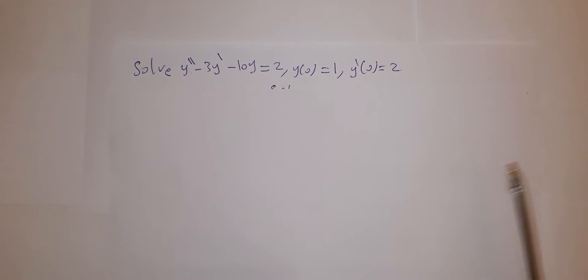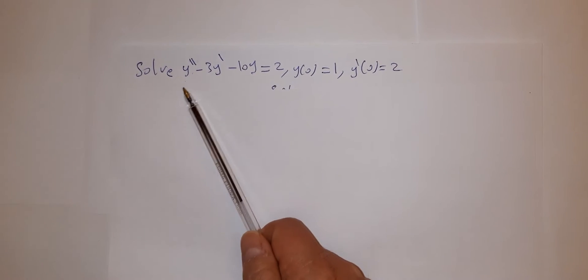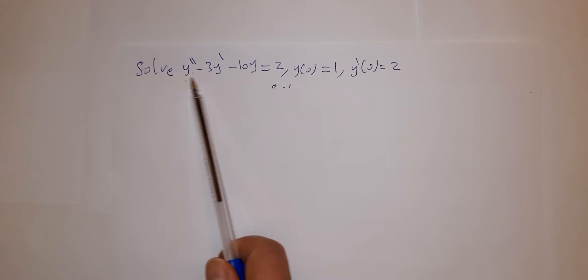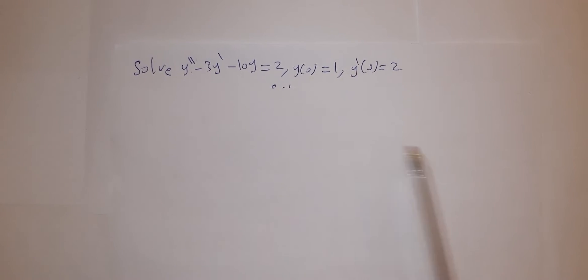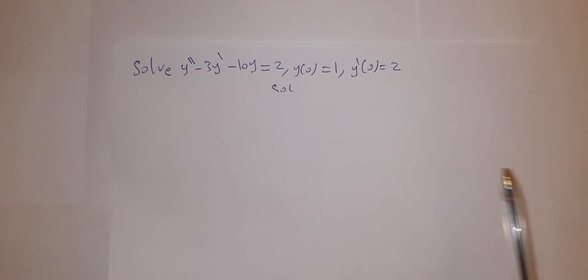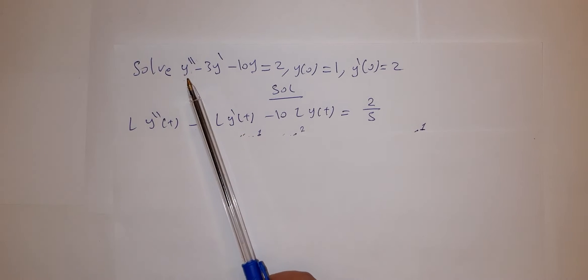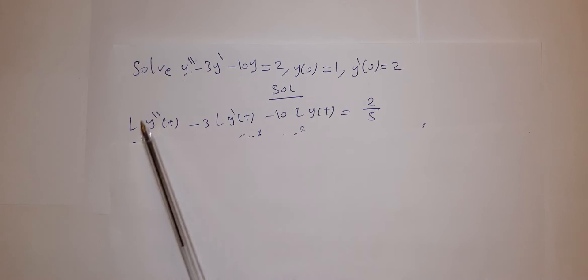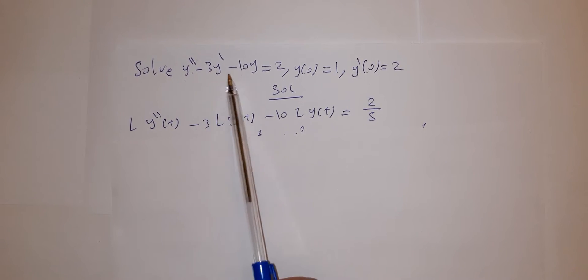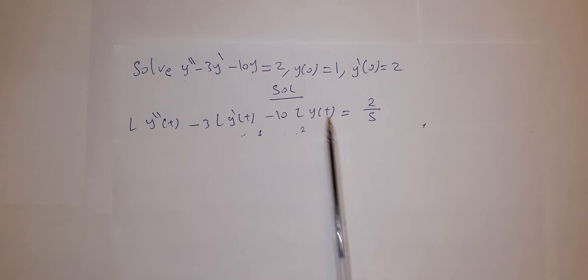Example number 2: we have to solve the second order initial value problem using Laplace transforms. We apply Laplace transforms for each term, so we have Laplace of y double prime, minus 3 Laplace of y prime, minus 10 Laplace of y of t.